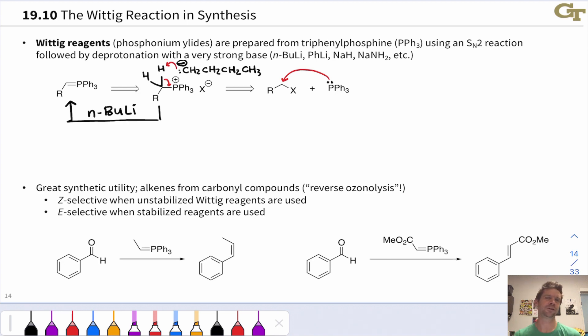It's right below nitrogen on the periodic table and nitrogen is a great nucleophile. Phosphorus is a pretty good nucleophile as well. So it can engage in an SN2 reaction with an alkyl halide to give a phosphonium salt.